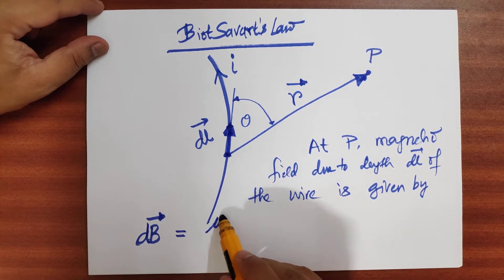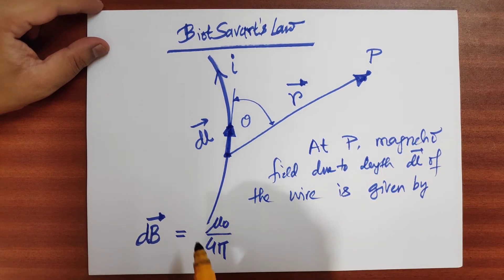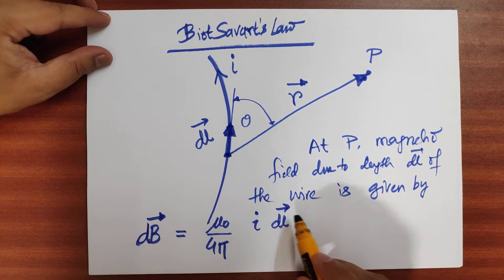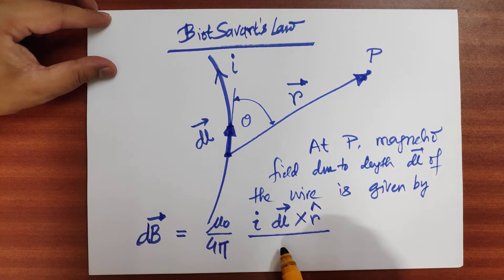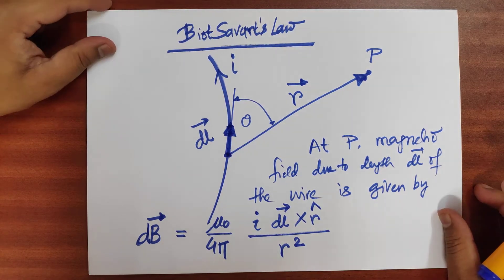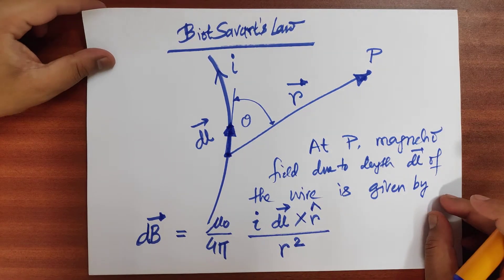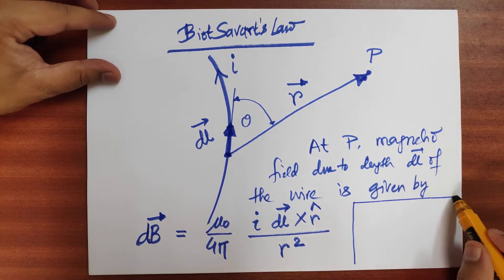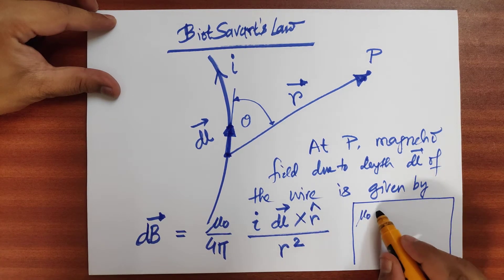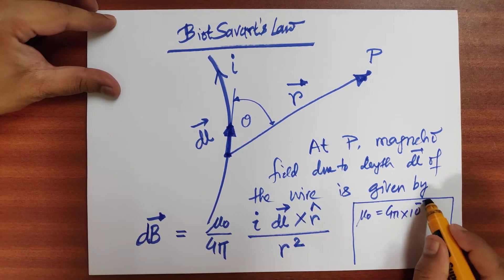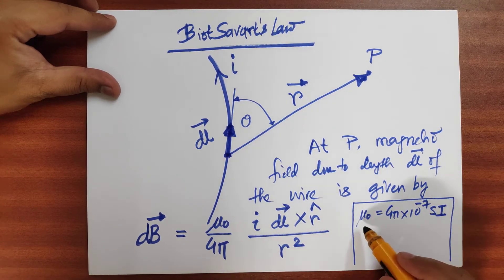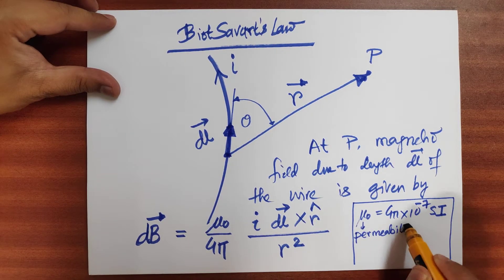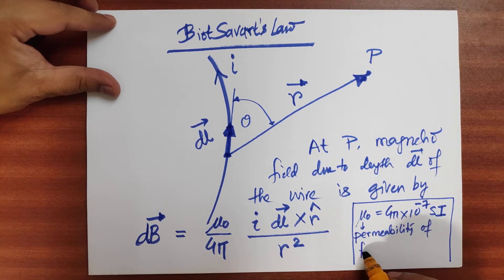DB is equal to mu-0 by 4-pi times I DL cross R-hat divided by R squared. This is the Biot-Savart law, where mu-0 is known as the permeability of free space. Mu-0 happens to be 4-pi times 10 to the power minus 7 SI units.